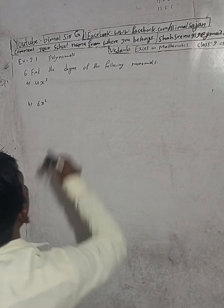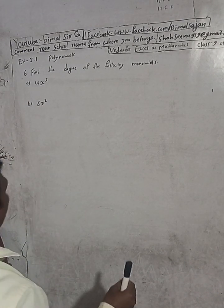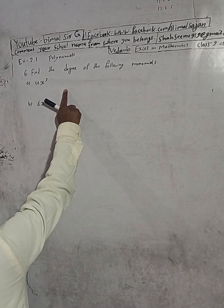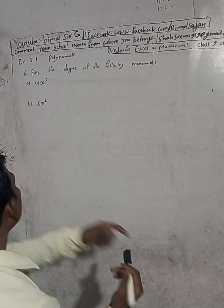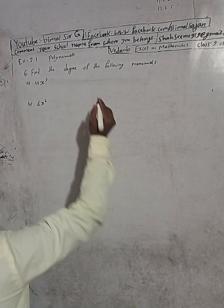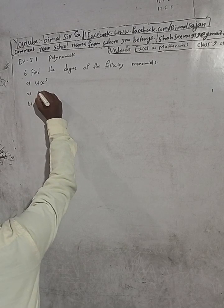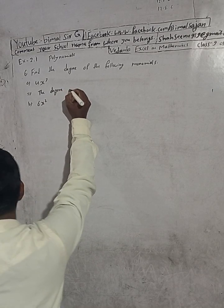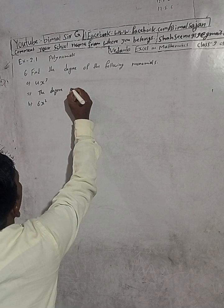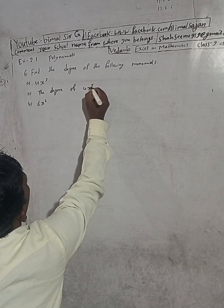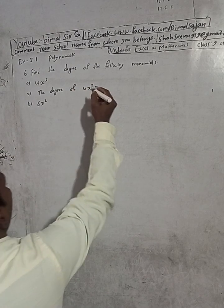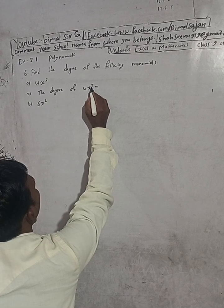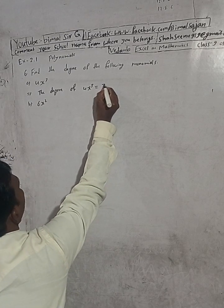Now the question is here — question 6(a): find the degree of the following monomials. Monomials means there is a single term, as you can see. So in the monomials I have to find the degree. The degree of this monomial: 4x cubed. So what is the highest power? The highest power of x is 3. So 3 is the degree.